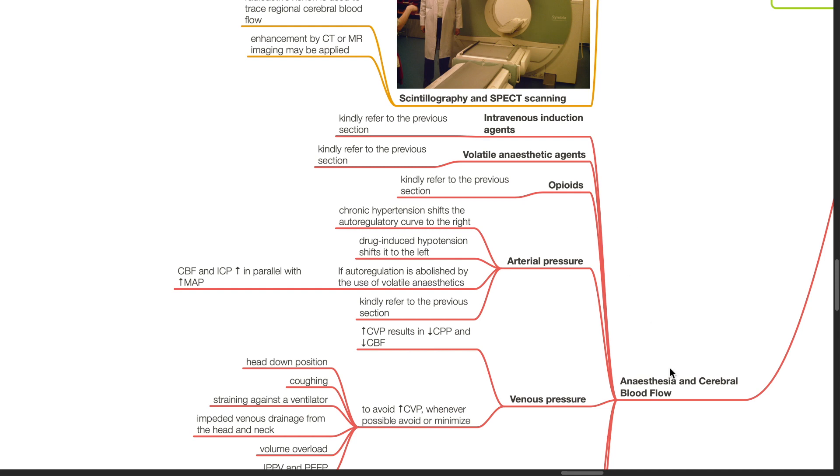Anesthesia and cerebral blood flow. For a discussion on the influences of intravenous induction agents, volatile anesthetic agents and opioids on CBF, kindly refer to the previous section.